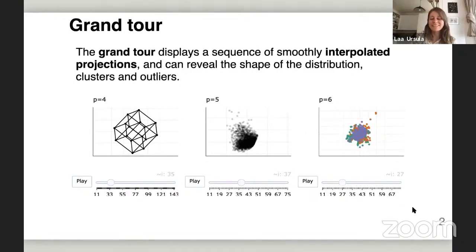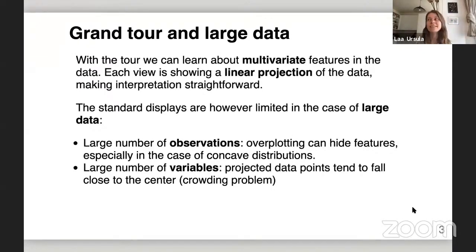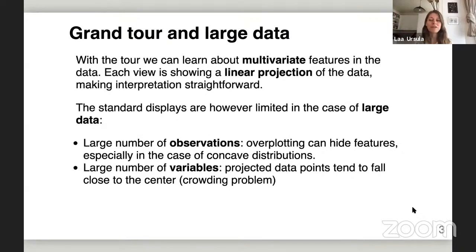To summarize the tour: we've seen that we can understand multivariate features in the data. Each view is just a linear projection, which has the advantage of being straightforward to interpret in terms of the original parameters. A drawback is that once we have large data, the typical scatterplot displays start to not work that well. There are two different types of large data that cause problems: having a lot of observations — many rows — leads to overplotting and missed features, especially concave features like hollowness inside a distribution that tends to get hidden in a projection.